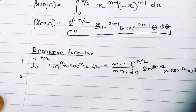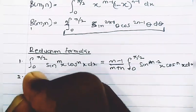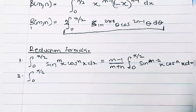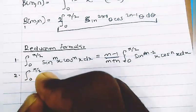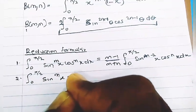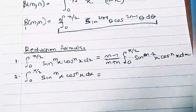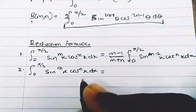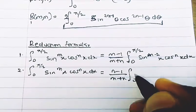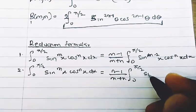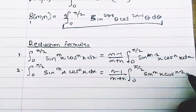The second reduction formula says: the integral from zero to pi/2 of sine^m(x) cos^n(x) dx is equal to (n-1)/(m+n) times the integral from zero to pi/2 of sine^m(x) cos^(n-2)(x) dx.